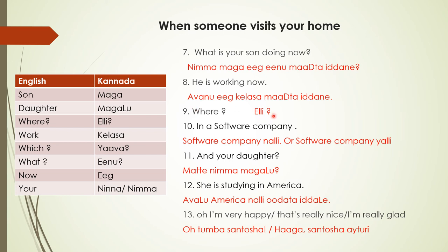Where — elli? In a software company — software company nalli. You can say software company nalli kelasa maadta iddhaane. And your daughter — mathe nimma magalu? She is studying in America — awalhu Amerika nalli oodhtaa iddhaane. Oodhu means to read, to study — abalhu Amerika nalli oodhtaa iddhaane.